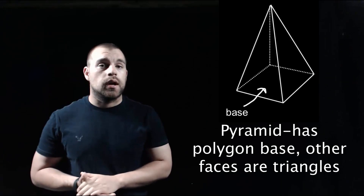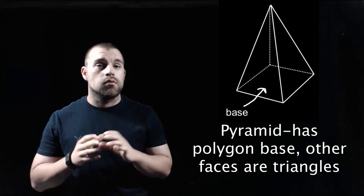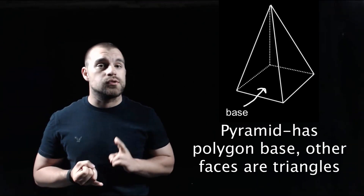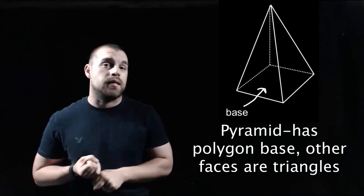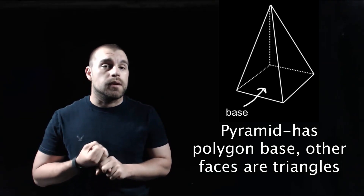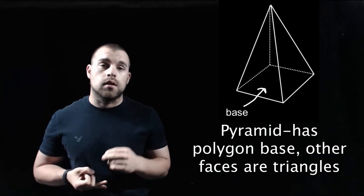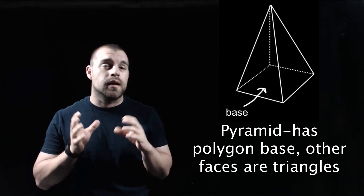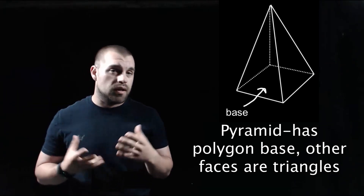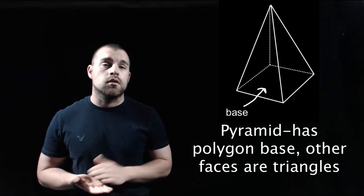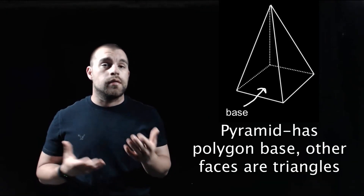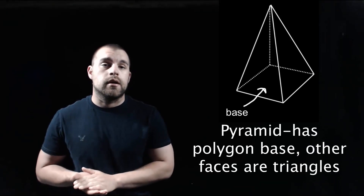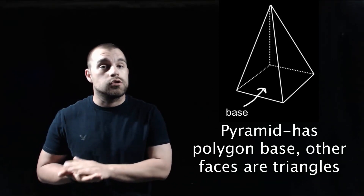As we're looking at pyramids, remember that our pyramids are going to have some sort of base figure that's a polygon. So it could be a triangle, a square, a regular polygon — that base could really be any figure. But the other sides, or the other faces of our pyramid, are all triangles.